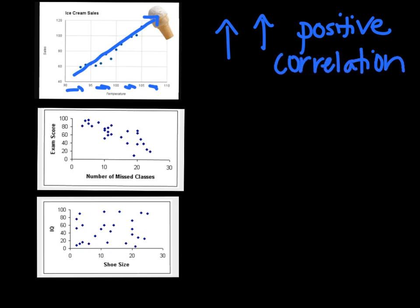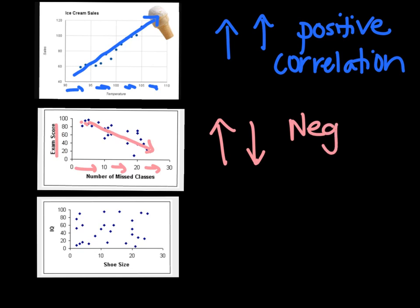The second one: as my number of missed classes increases, what happens to your exam scores? They start up high and then keep going down as you miss more classes. So as your number of missed classes goes up, your exam scores go down. That's called a negative correlation or negative association.